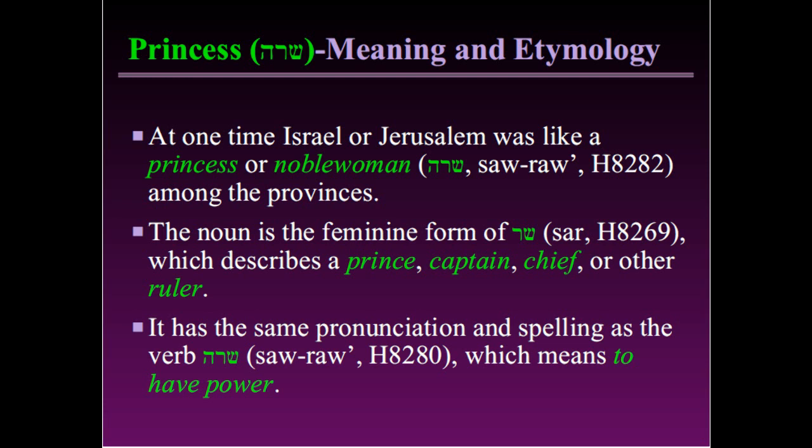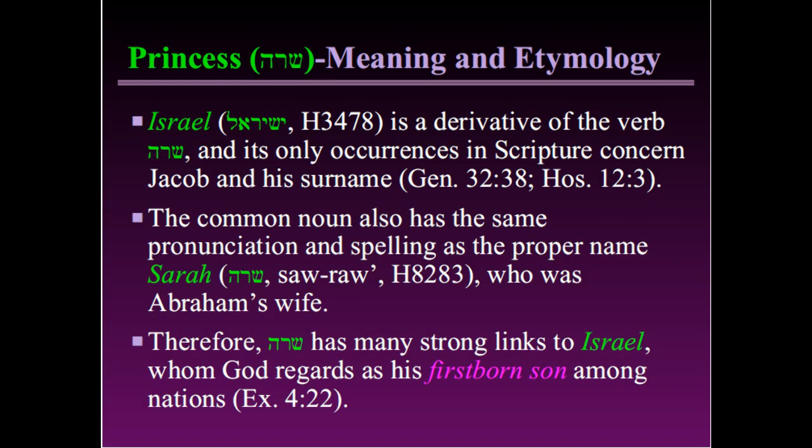The name of Israel, 'Yisrael,' is a derivative of that verb 'sarah.' In Scripture, the only two occurrences of that verb concern Jacob and his surname. In Genesis 32, God described Jacob as one having power with God, and therefore he called him Israel. The common noun we're studying has the same pronunciation and spelling as the proper name Sarah, Hebrew 'sarah,' Strong's number 8283.